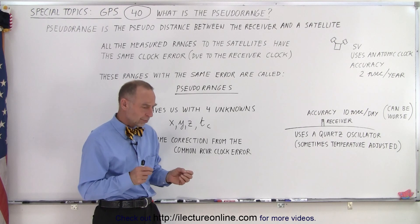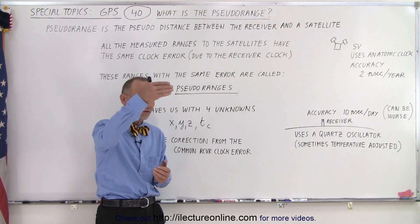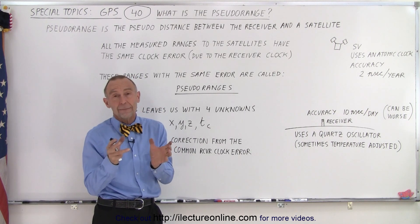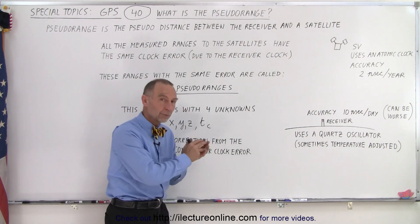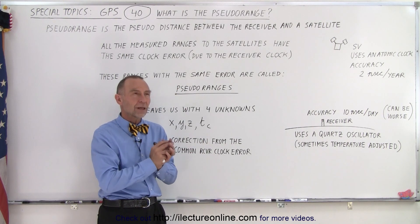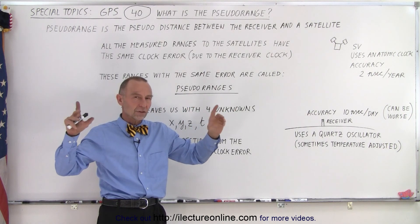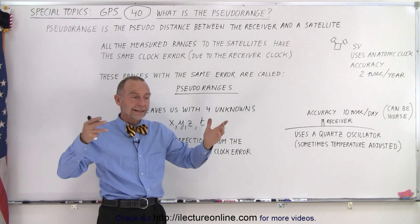So let's assume then that the range between the receiver and the satellite is mainly offset by the error in the clock of the receiver. So that means that if we assume that all the clocks on the SVs, on the satellites, are good, then the error is common between the range readings or the range calculations between the receiver and the satellite.